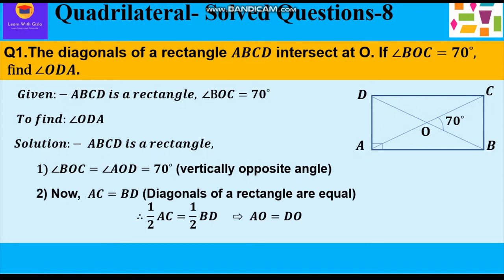Further, diagonals of the rectangle are also equal in length. We can say AC is equal to BD and therefore half of AC is equal to half of BD, which implies that AO is equal to DO.